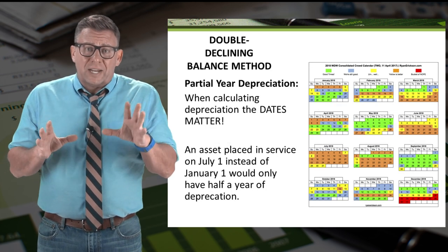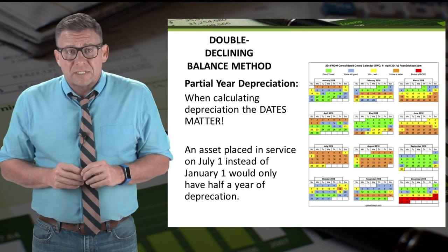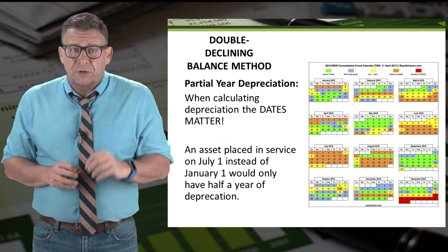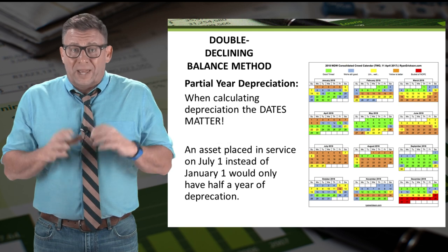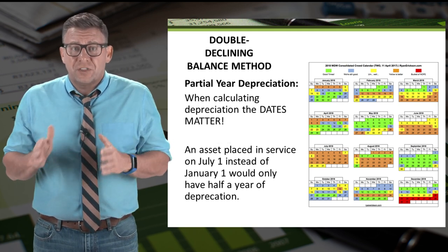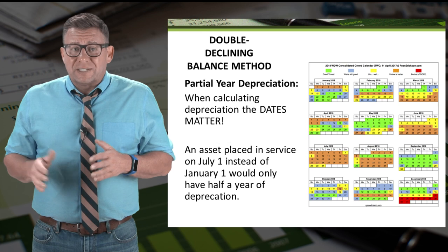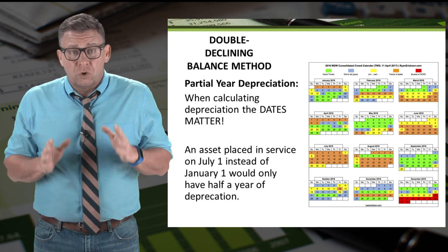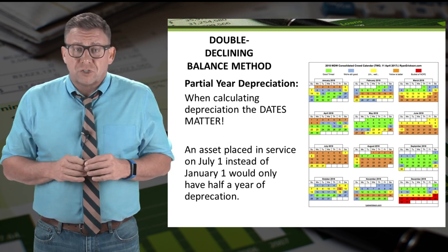The final concept related to double declining balance depreciation is partial year depreciation. When assets are placed in service on dates other than the first of the year, we need to adjust how much depreciation we record for the first year.